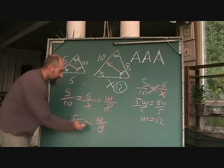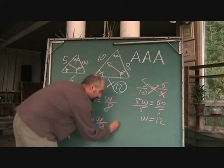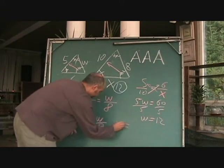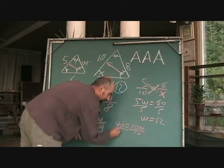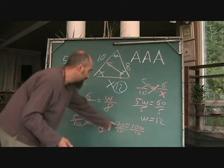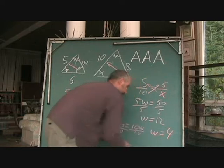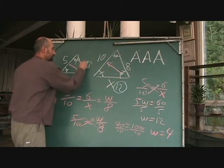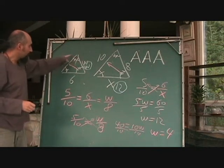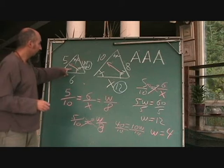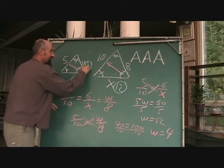Cross multiply: 8 times 5 is 40, equal to 10w. Divide by 10, so w is equal to 4. You just solved for w, which is 4. So basically this is the triangle you had, and w is equal to 4.